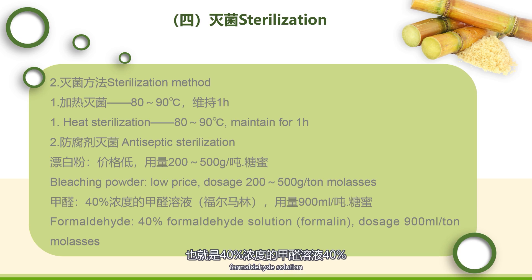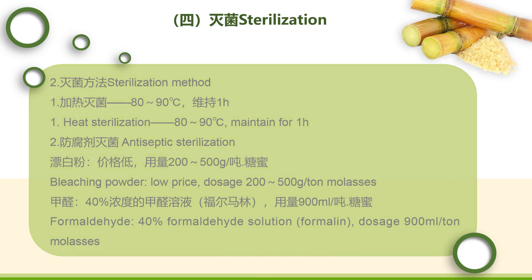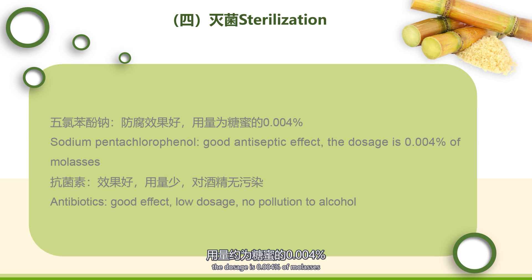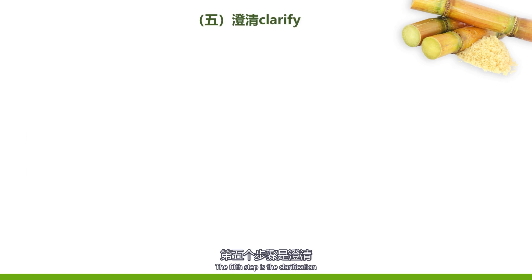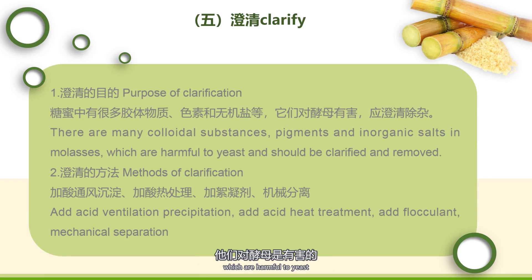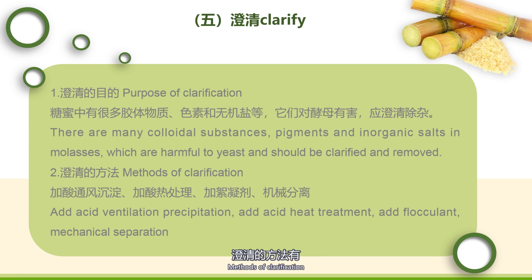甲醛可用福尔马林液，即40%浓度的甲醛溶液，用量约为每吨加入900毫升。还可以通过加入五氯酚钠，防腐效果比较好，用量约为糖蜜的0.004%。抗菌素用量也很少，对酒精无污染。第五步骤是澄清，目的是去除糖蜜中大量的胶体物质、色素和无机盐，它们对酵母有害，应澄清除去。